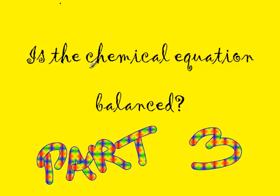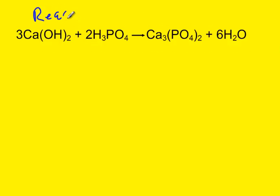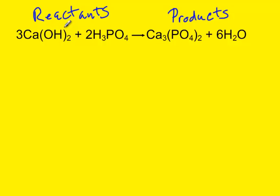We're now ready for the final session in determining if a chemical equation is balanced. We remember from earlier sessions that these are called the reactants — they exist before the reaction — and these are the products. The law of conservation of mass says that whatever atoms exist in the reactants must equal the same number and type of atoms that exist in the products. The first thing we're going to do is draw a line separating the reactants and the products.